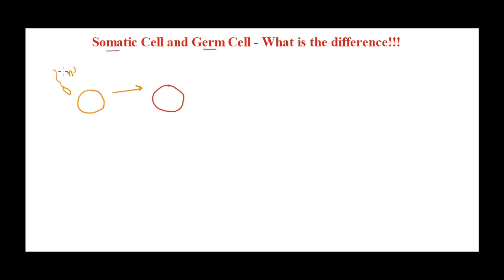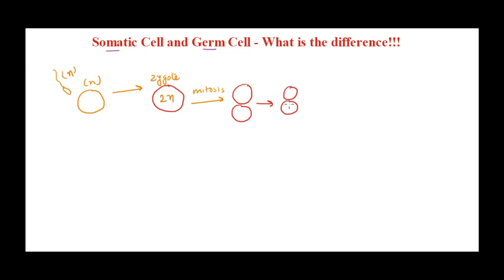The sperm and egg — the gametes — are haploid, meaning they have only one set of chromosomes. They fuse together to give us the diploid zygote. This zygote then undergoes rounds of cell division — mitosis — dividing into two, then four, and eventually giving us lots of cells.